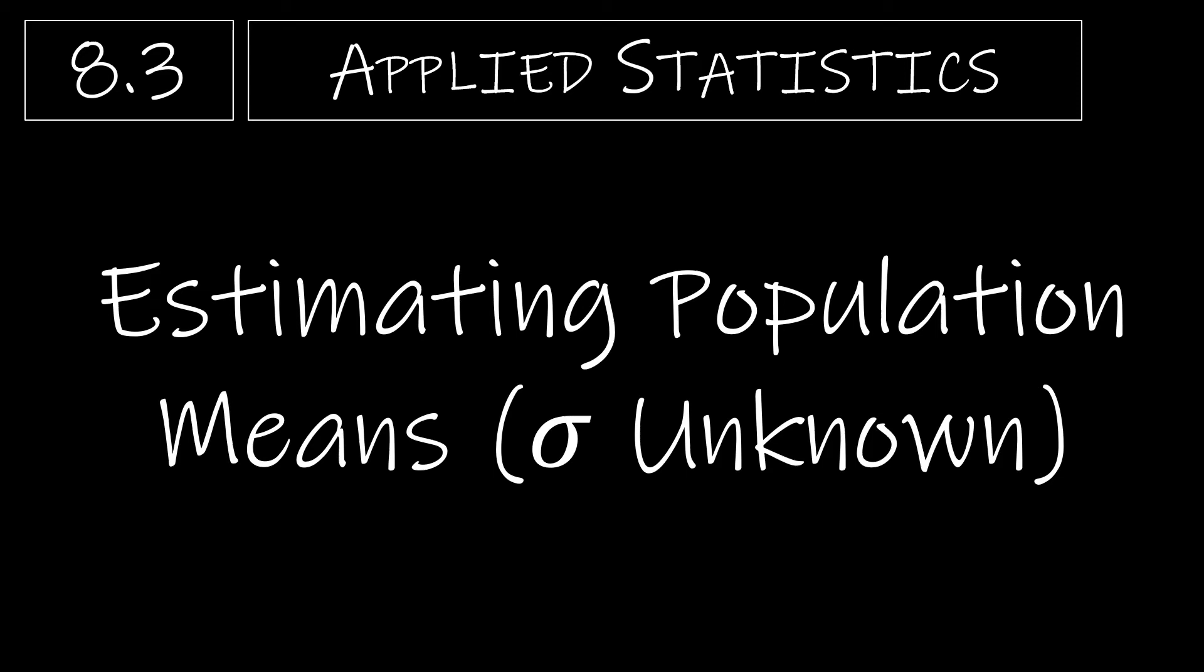In this video we're going to look at estimating population means where sigma is unknown, which is much more common than when sigma is known. If you have not already, please go back and watch section 8.2 video which talks about the student's t distribution. We will be using what we learned in that video to create these confidence intervals.